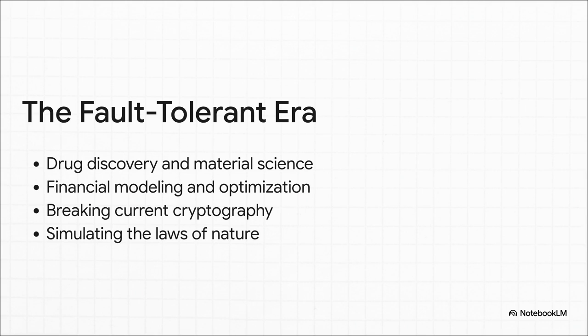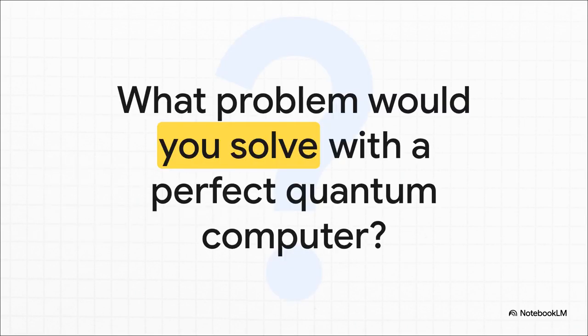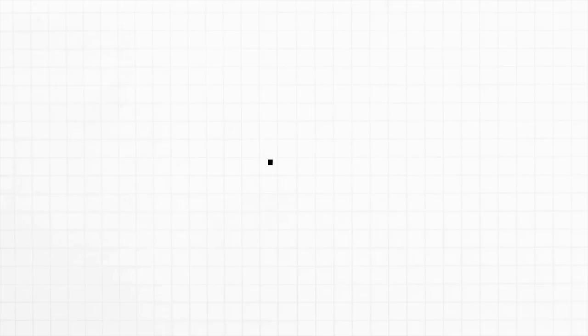And when we finally get there, oh man, the possibilities are revolutionary. We are talking about designing new drugs and materials atom by atom, creating financial models that can handle a level of complexity we can't even imagine right now. And yeah, breaking the very encryption that protects most of our digital world today. But most profoundly, we will finally have the tool that Feynman dreamed of all those years ago, a computer that can truly simulate the fundamental laws of nature itself. So, from a simple, frustrated exclamation by a physicist 40 years ago, we've gone on this incredible journey. We've created a new kind of information, we've battled the dragon of quantum noise, and now we're right on the cusp of a truly fault-tolerant machine. The progress is real, the potential is immense, and it really just leaves us with one final exciting question to think about. What problem would you solve if you had a perfect quantum computer?